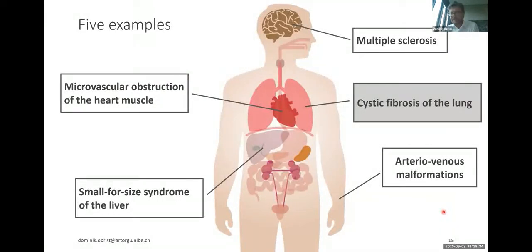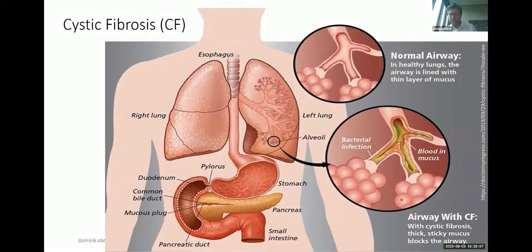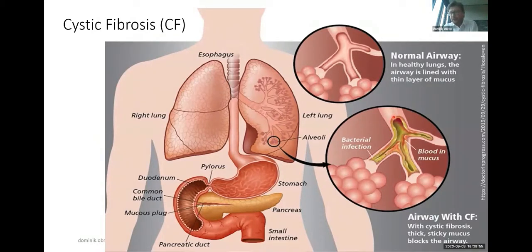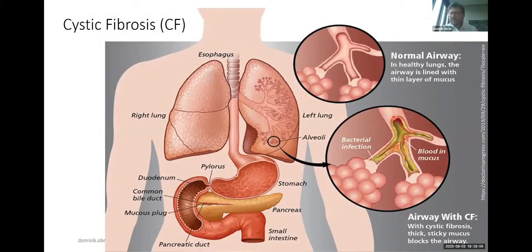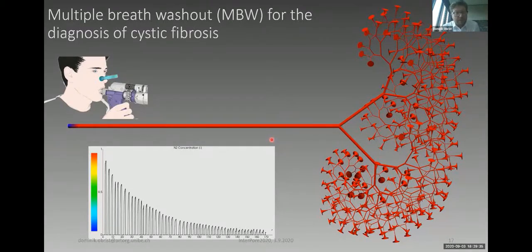You can also do this computationally. An example is cystic fibrosis of the lung — a congenital, chronic disease progressing over many years that leads to the formation of mucus inside the small airways. It's desirable to diagnose this disease very early, already at the infant stage, because then treatment can be very effective. The problem is that at the infant stage it's very hard to detect this illness because the mucus has not yet formed, and the obstructions are only in the smallest airways, which are not accessible by common tools. What pneumologists use to study the condition of the smallest airways is a so-called multiple breath washout.